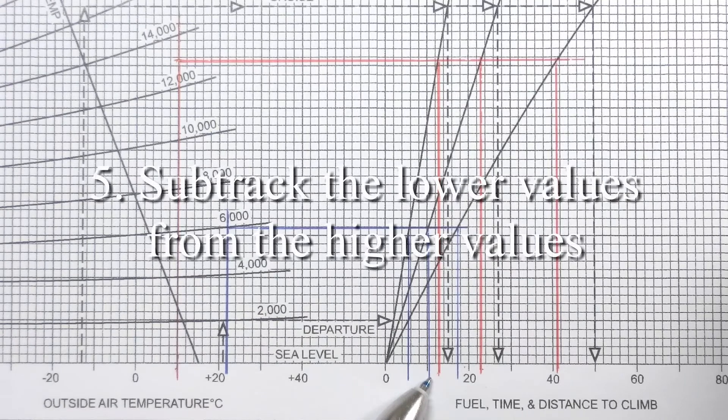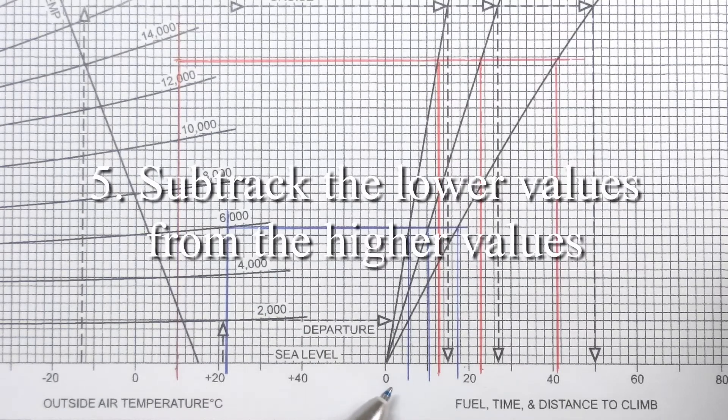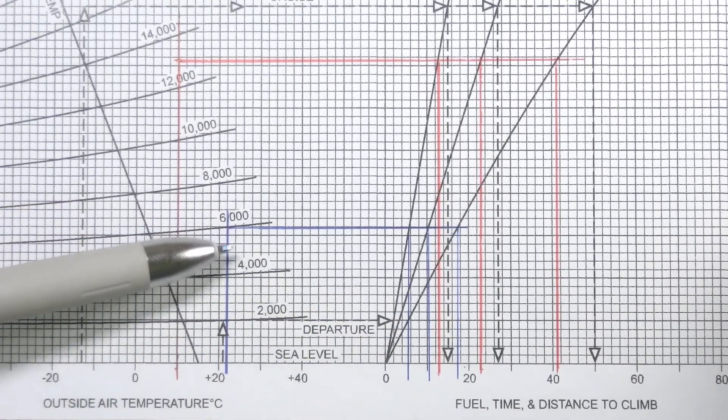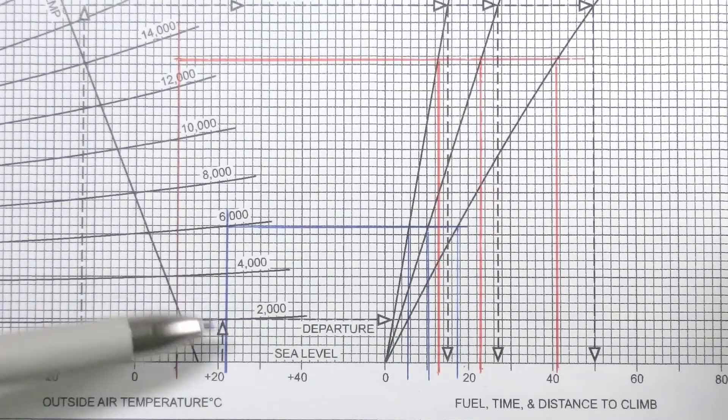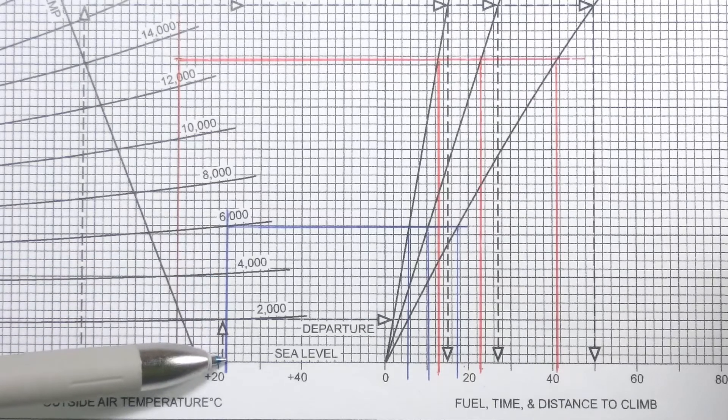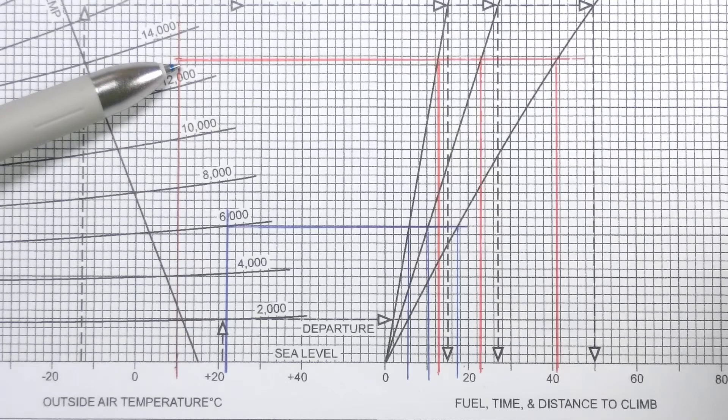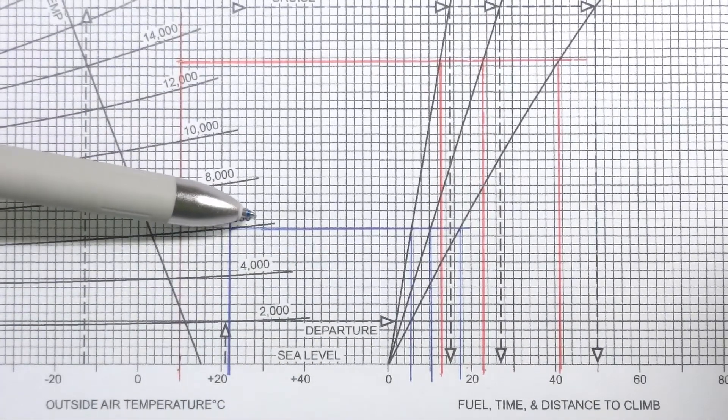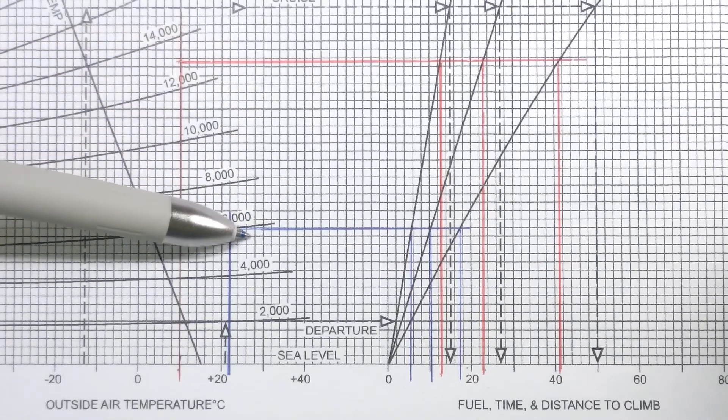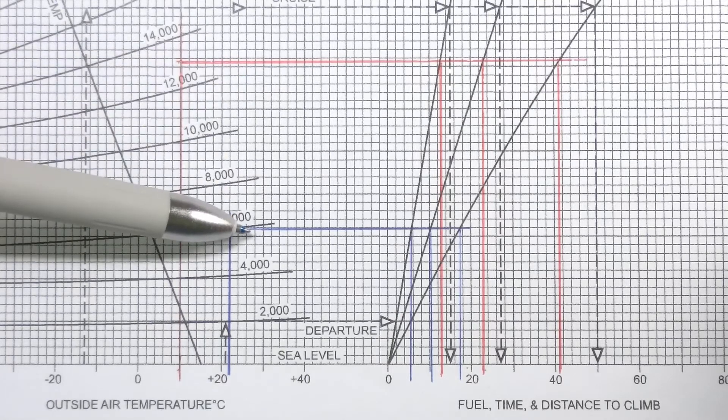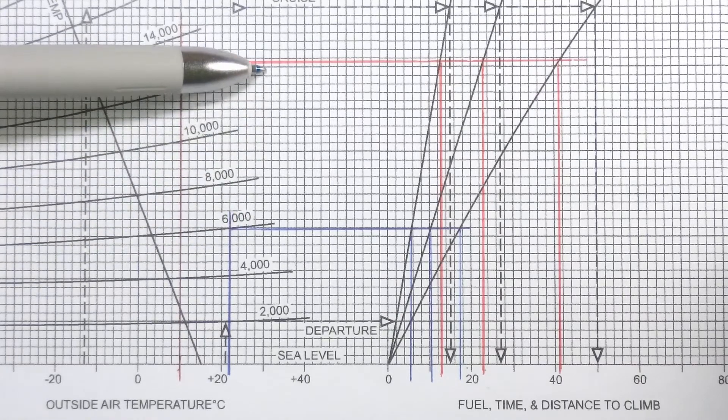So what's left to do now is to subtract the smaller values from the larger values, or we would subtract the blue lines from the red lines. Remember that everything under 6,000 feet would be common to the same aircraft if it were to climb from sea level to 6,000 or from sea level to 13,000 feet. So 6,000 and below we're going to subtract that and that gives us the difference or the climb from 6,000 feet to 13,000 feet, which is what the airplane will be doing.